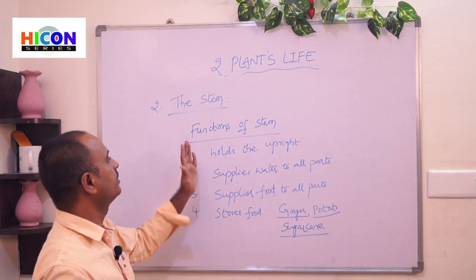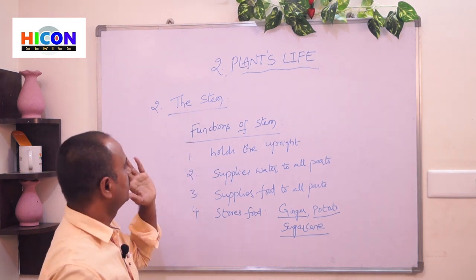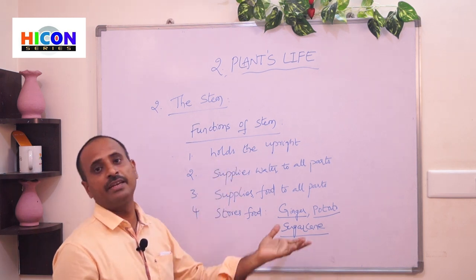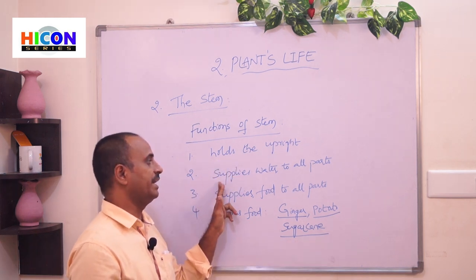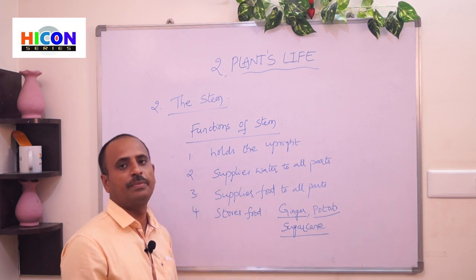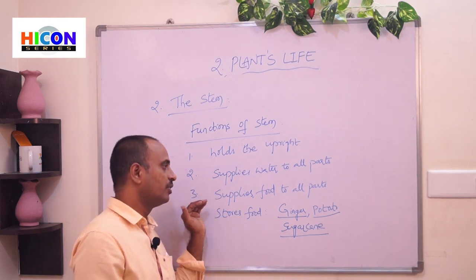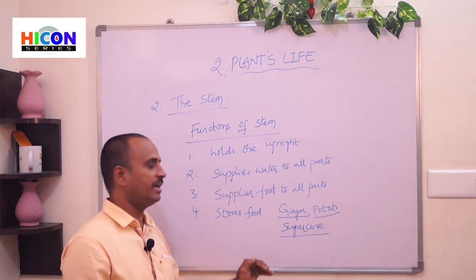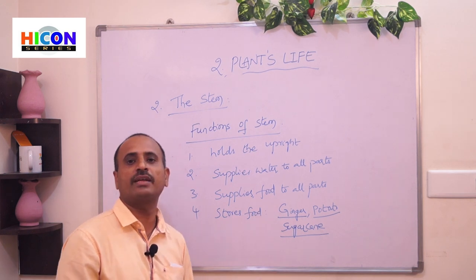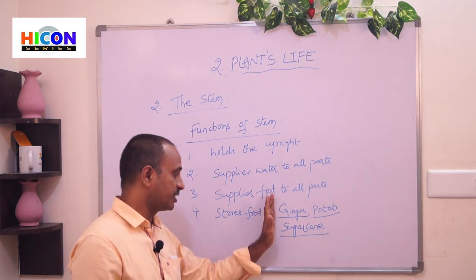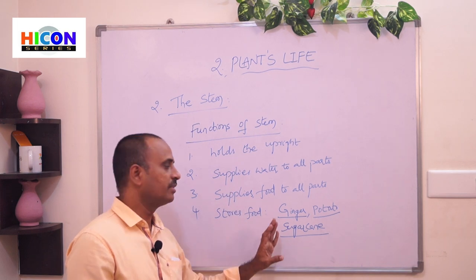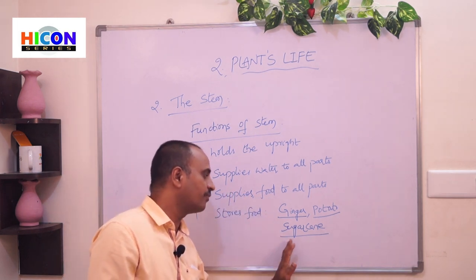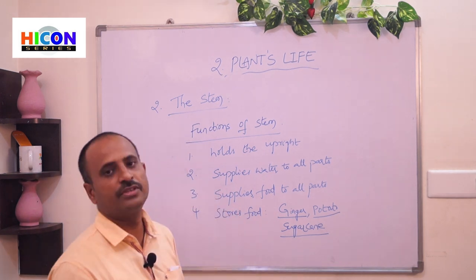These are the functions of the stem. First: holds the plant upright. Second: supplies water to all parts of the plant. Third: supplies food to all parts of the plant. Fourth: some stems store food in them — examples are ginger, potato, and sugarcane. These are stems of plants that store food, so they become thick and bulbous.